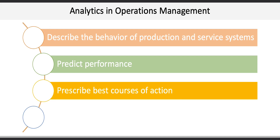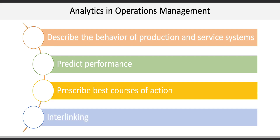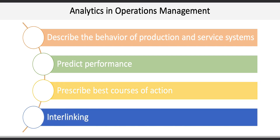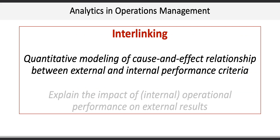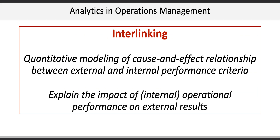Analytics can also aid in interlinking, which involves the quantitative modeling of cause and effect relationships between external and internal performance criteria. For example, if a customer technical support call center sets a target where the average support call should last no more than five minutes, what will the impact be on customer satisfaction? Other examples include the impact on customer retention by Microsoft shifting to a subscription model for its Office product, or the effect of adding a second drive-through lane on customer wait times at McDonald's.